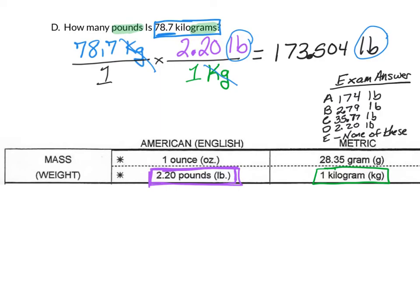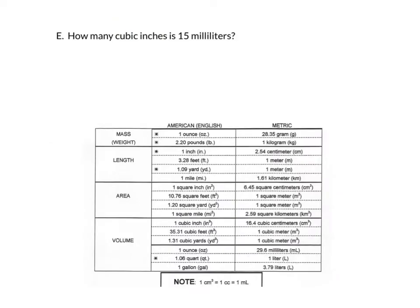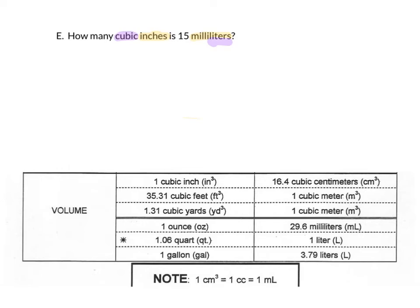Letter E: how many cubic inches are in 15 milliliters? 'Cubic inches' tells us this is volume, and milliliters also indicates volume, so this is a volume-to-volume calculation using the metric-to-American chart. We start with 15 milliliters over 1 and put milliliters on the bottom. But the chart doesn't directly connect milliliters to cubic inches — the milliliter row has fluid ounces, not cubic inches. However, at the top we do have one cubic inch equals 16.4 cubic centimeters. Since 1 mL equals 1 cubic centimeter, we can bridge the conversion.